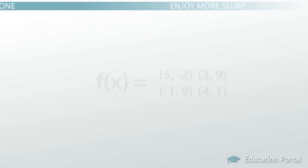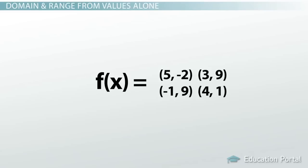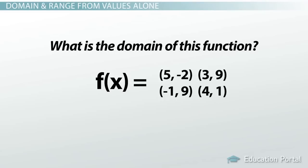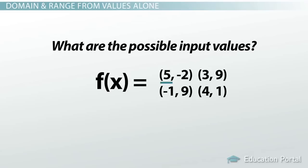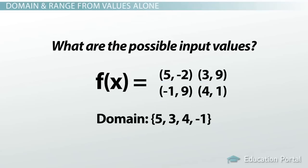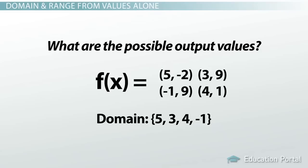We'll start with an easy, simple function. This function doesn't have a rule — it's simply a collection of input and output values. For example, it tells you that when you input 5, you get out negative 2, or when you plug in 4, you get 1. So what is the domain of this function? Another way of asking that is: what are the possible input values? Well, there's only a few: 5, 3, 4, and negative 1. And then the range — the possible outputs — happens to be only negative 2, 9, and 1. Although two different inputs both give you 9, you don't have to list it twice when writing out the range.